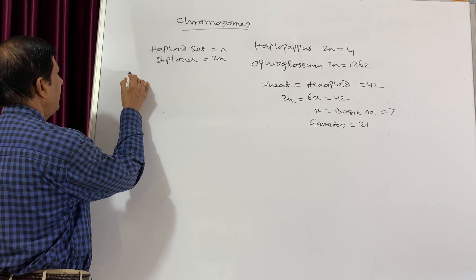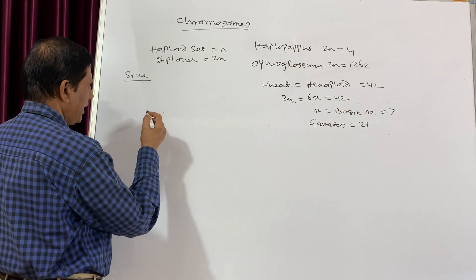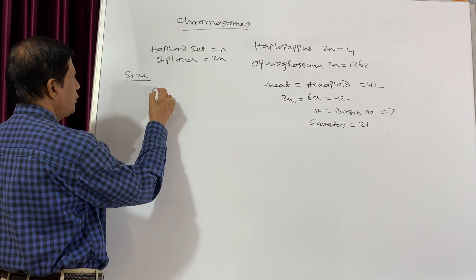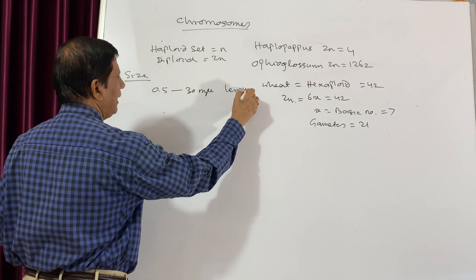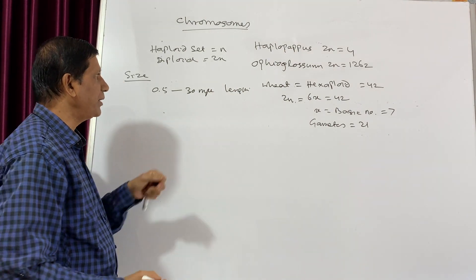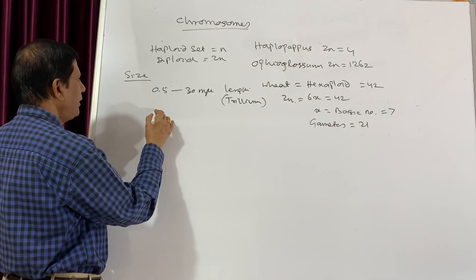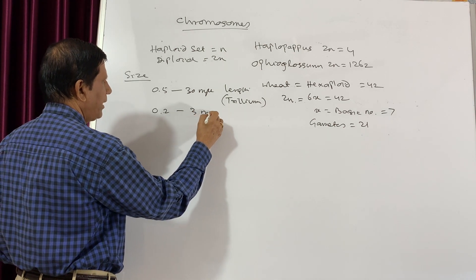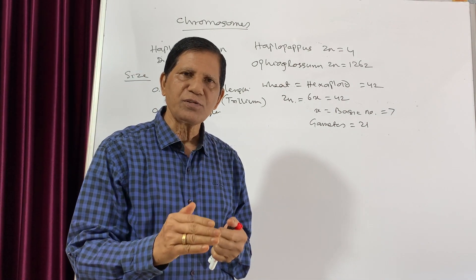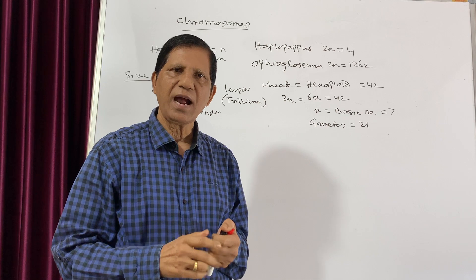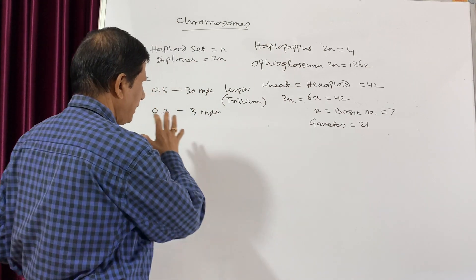The next we will discuss is the size of the chromosomes. Chromosomes usually range from 0.5 to 30 millimicrons in length, and this 30 millimicron length is found in Trillium. While in diameter it ranges from 0.2 to 3 millimicrons. Plant chromosomes are bigger than animal chromosomes, and in plants, monocot chromosomes are bigger than dicot chromosomes.